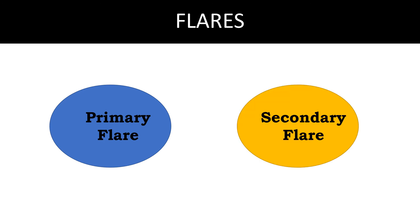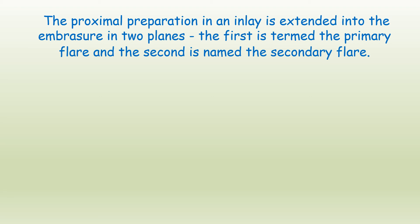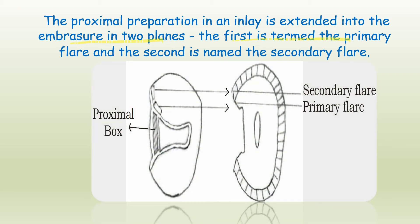Flares — there are two types: primary flare and secondary flare, given in a cast metal inlay. The proximal preparation of an inlay is extended into the embrasure in two planes. This is the proximal box area: the primary flare is the normal proximal extension similar to a class 2 amalgam. In an inlay, an additional secondary flare is given beyond the primary flare. The entire preparation extends from the proximal area right to the embrasure area with the help of these two flares, into self-cleansable areas.